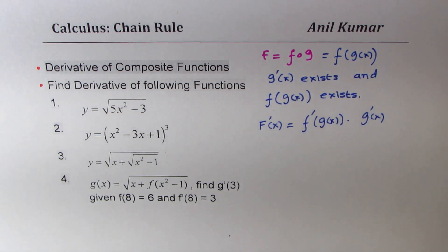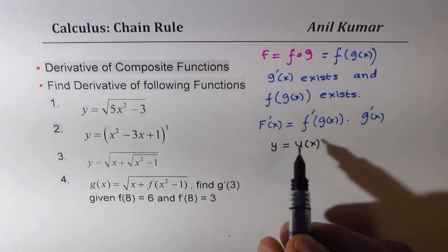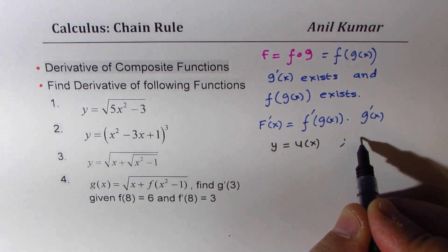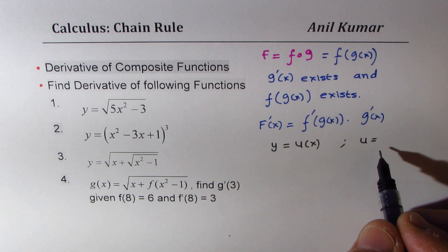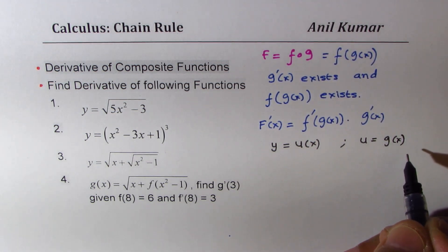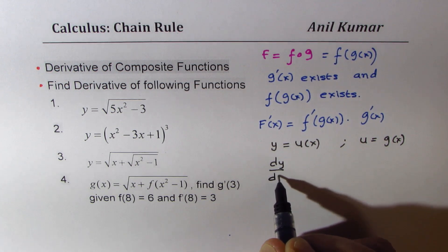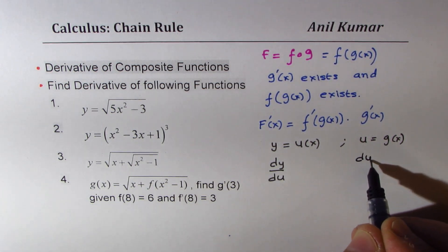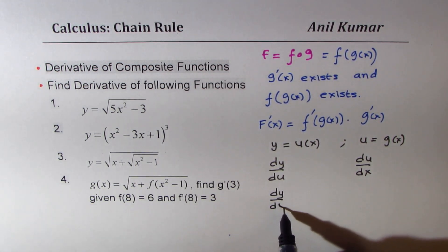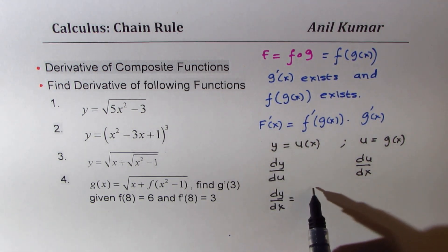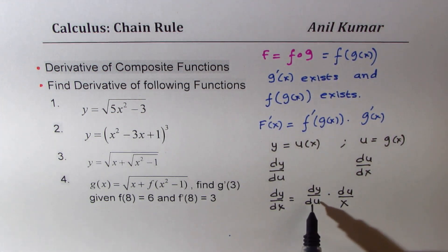We could also say that if y equals a function of u, which is a function of x — that is to say, if u is a function of x, so the inside function is u, which is g of x — then we can find dy/du from one side and du/dx from the other. To get dy/dx, we multiply these two: dy/dx equals dy/du times du/dx.